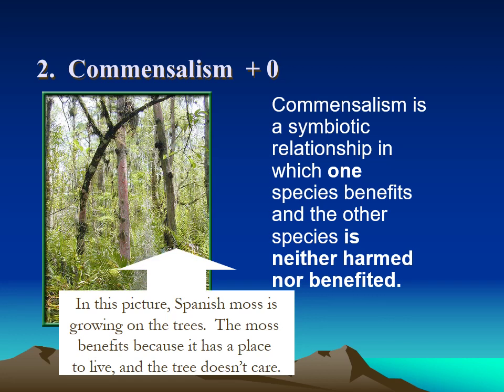The second type is commensalism. One organism gets something good and the other gets absolutely nothing — not anything good, not hurt, it's like it never even existed. The way you remember this is that commensalism has an O in it, meaning one of them gets nothing. Here's a picture of Spanish moss growing on a tree. The moss benefits because it has a place to live, but the tree doesn't need the moss and isn't affected at all — this is commensalism.